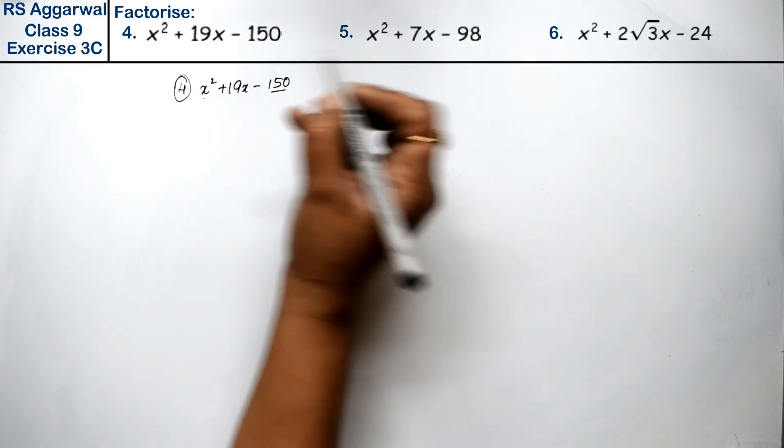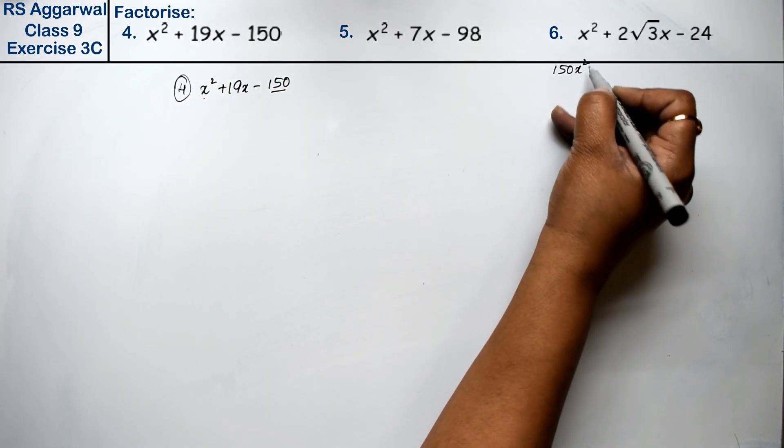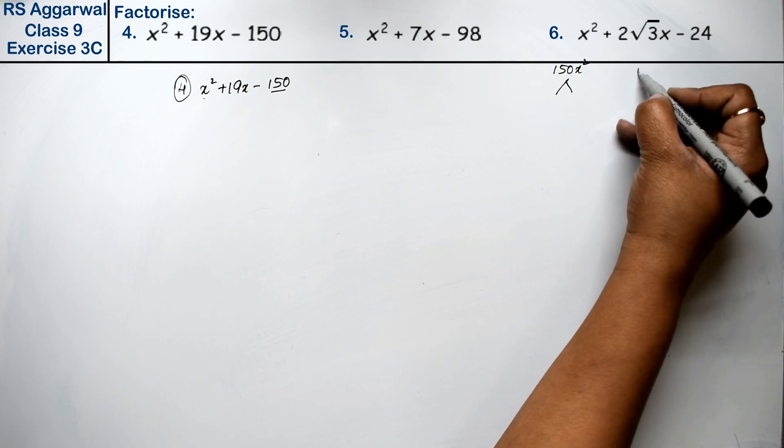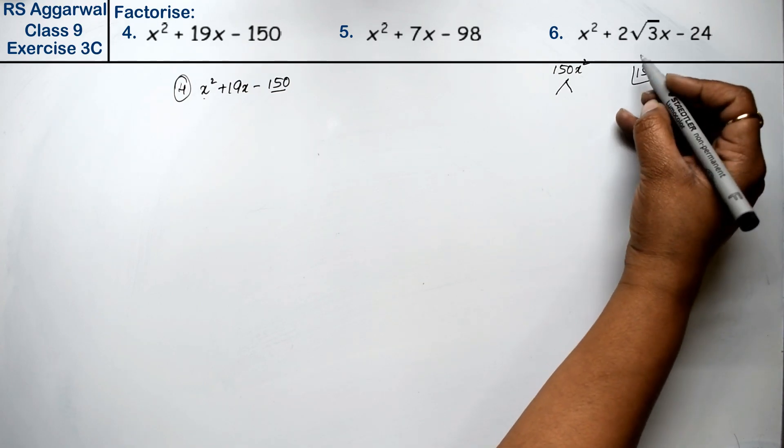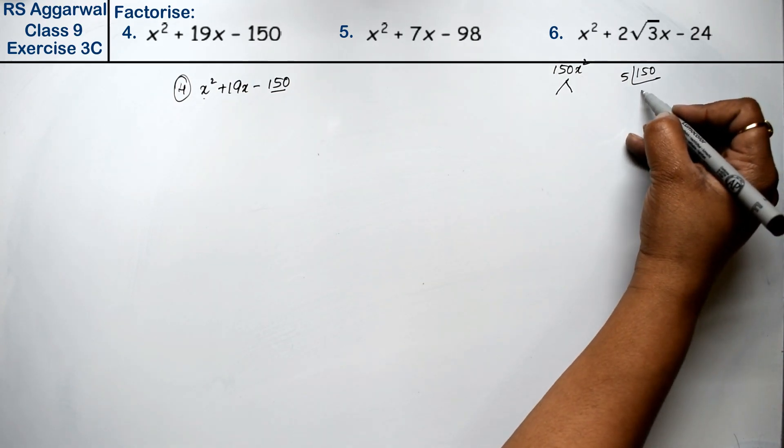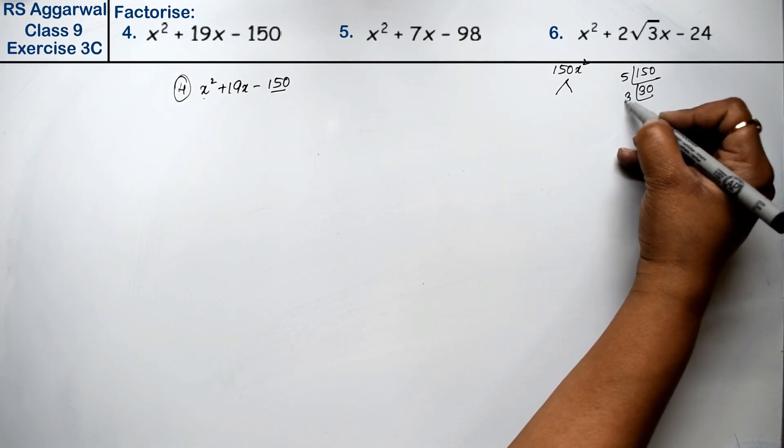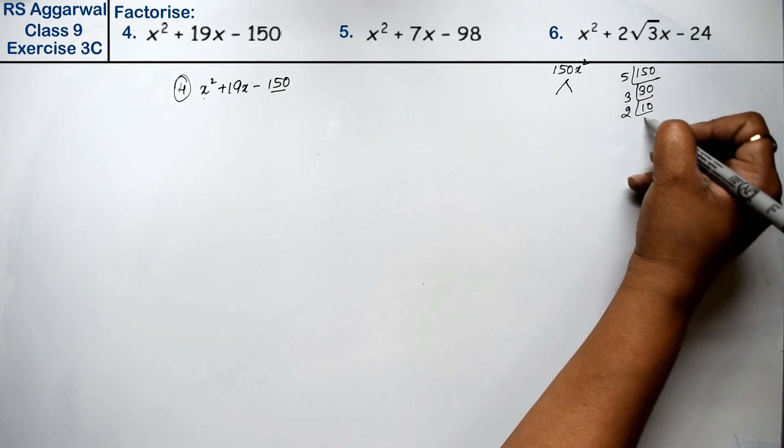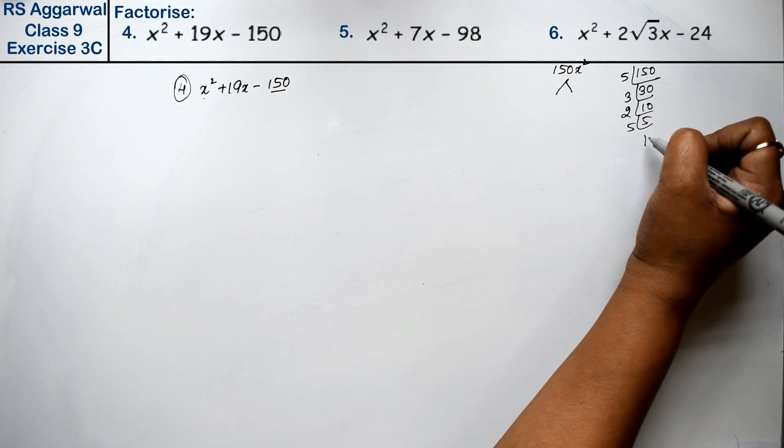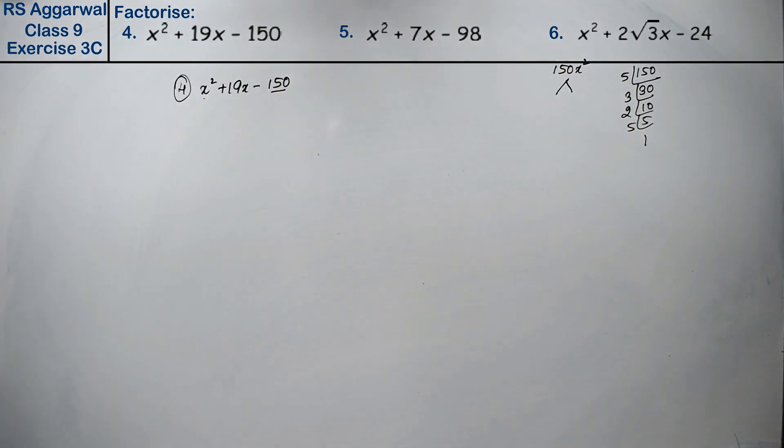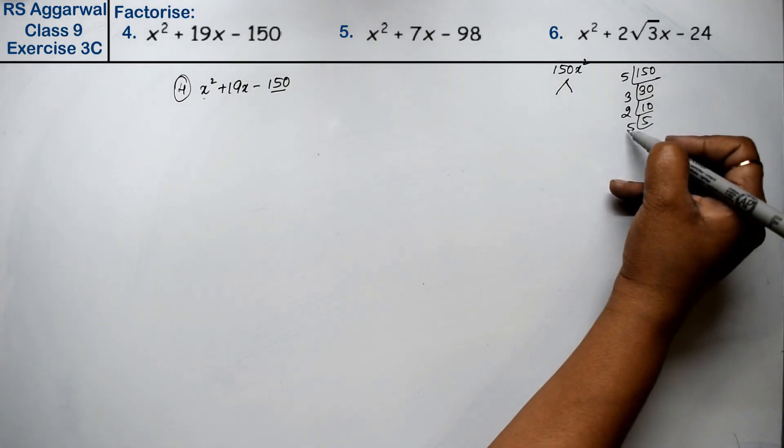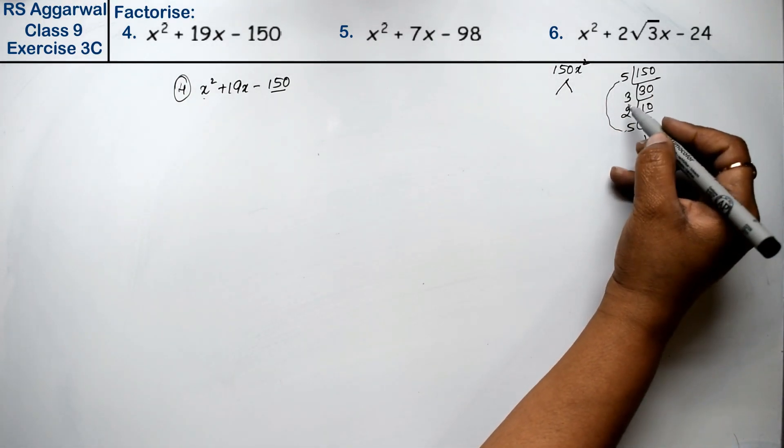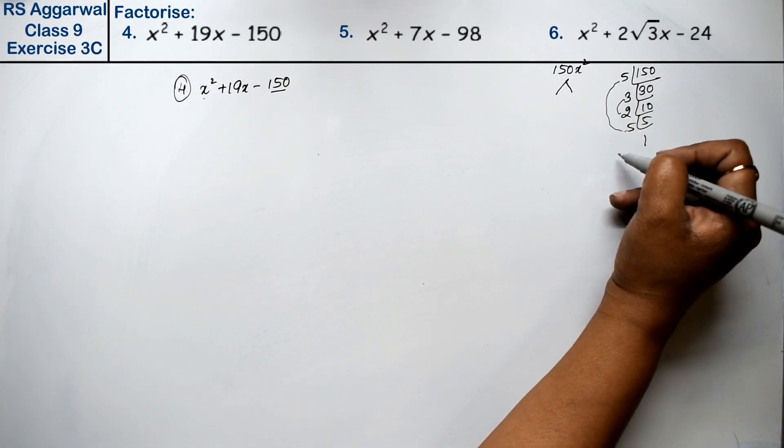If we multiply this, it comes to 150x square. We need two factors. The factors of 150 are 5, 3, 15, 10, 2, 5, and 1. Now, let's do plus minus and we have 19. If I do 5 times 5 equals 25, minus 6, then it will be 19.